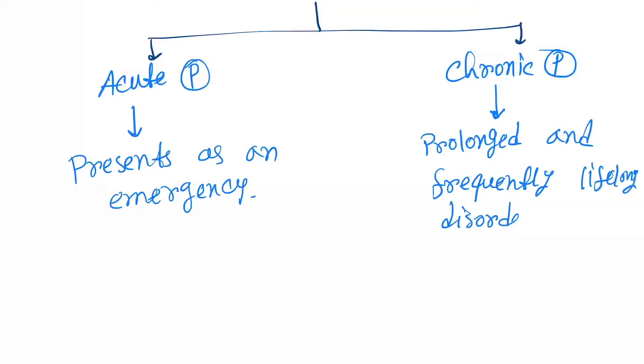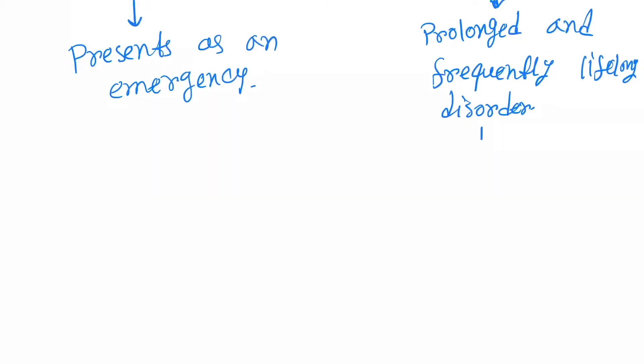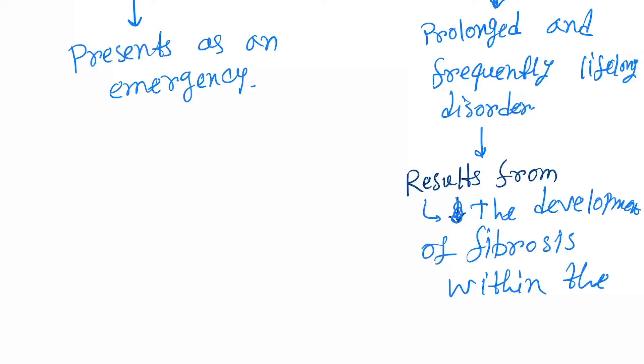Chronic pancreatitis results from the development of fibrosis within the pancreas. Now let's discuss acute pancreatitis in details.